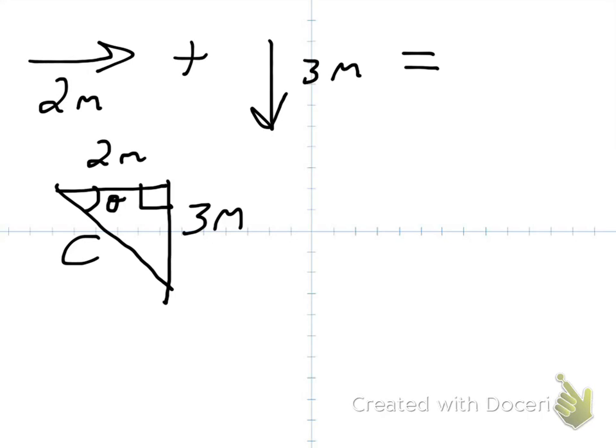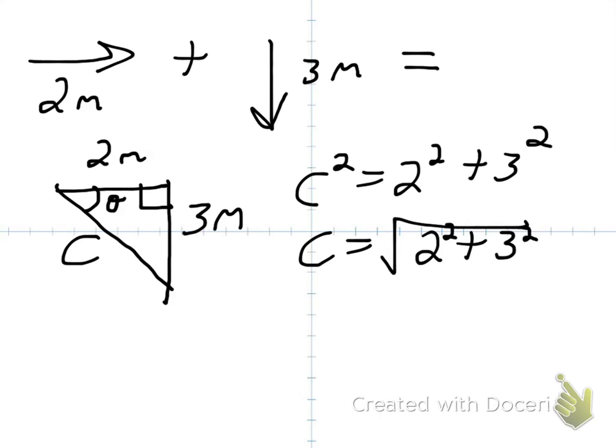So you have 2 meters on the top, 3 meters on the side. I labeled the hypotenuse with c. It's a right angle. And then we have theta as the angle that we're looking for. So to get the hypotenuse c, you do c squared equals 2 squared plus 3 squared. So Pythagorean theorem. Take the square root, and we get 3.6 meters. That's our hypotenuse. We're not done yet because a vector has a direction.